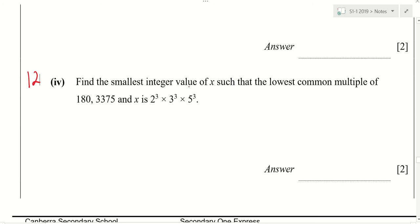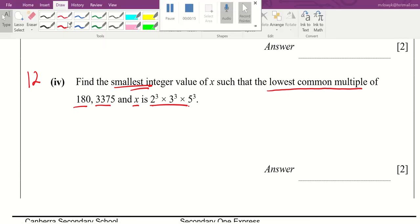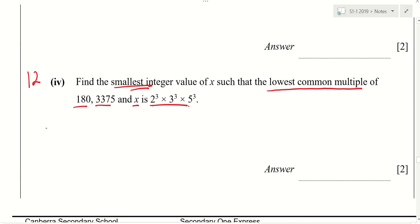So it says, 12 part 4 says the smallest integer that the lowest common multiple of this, this, this and this is this. So how do you set up the question? You need to set up the question by writing the number 180.